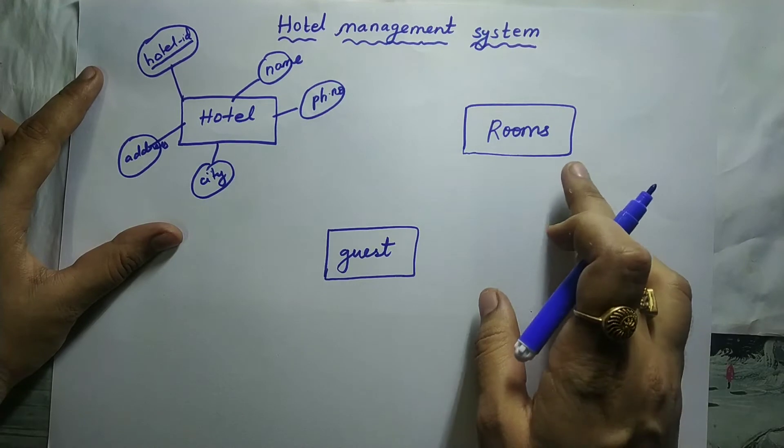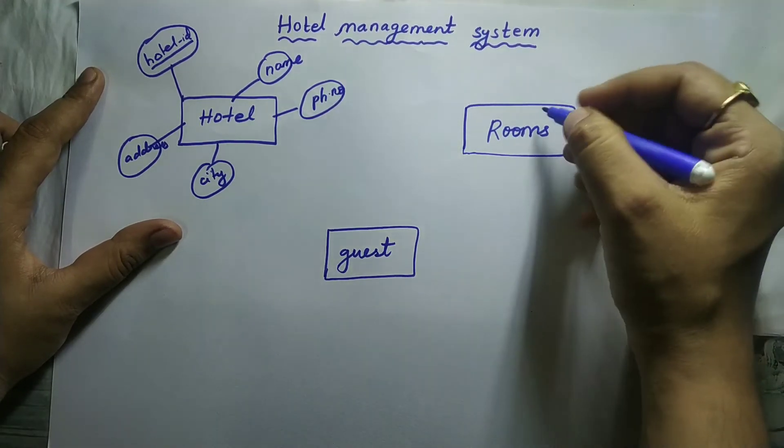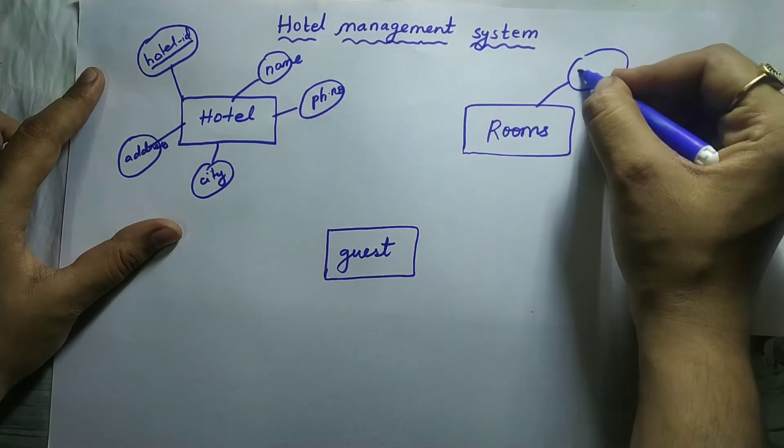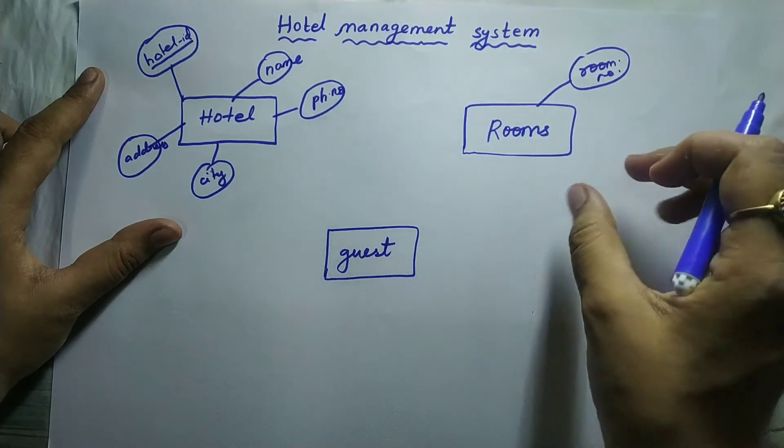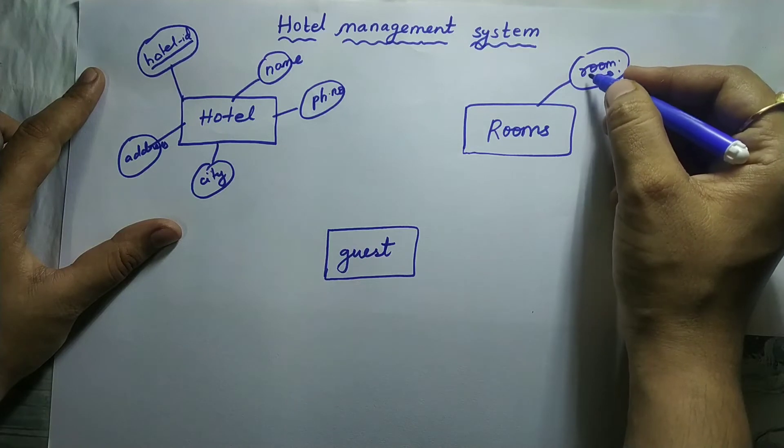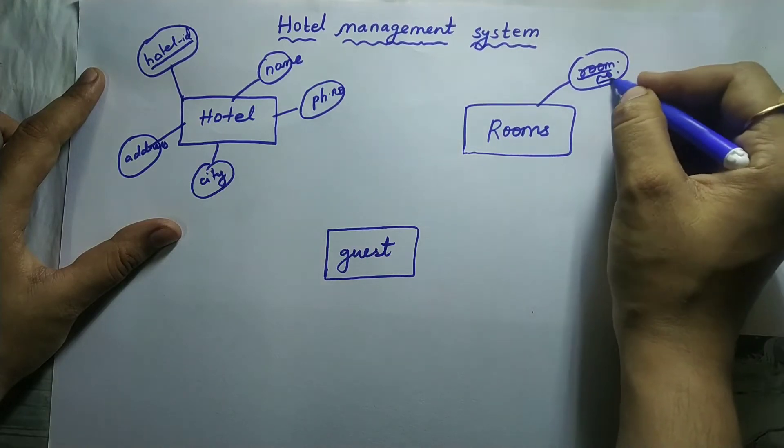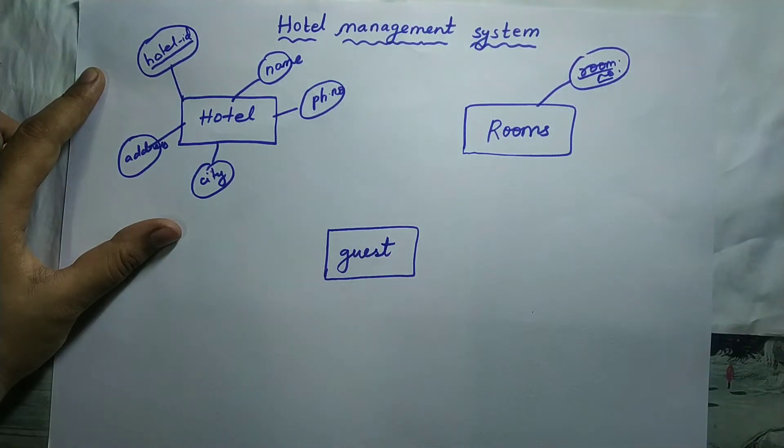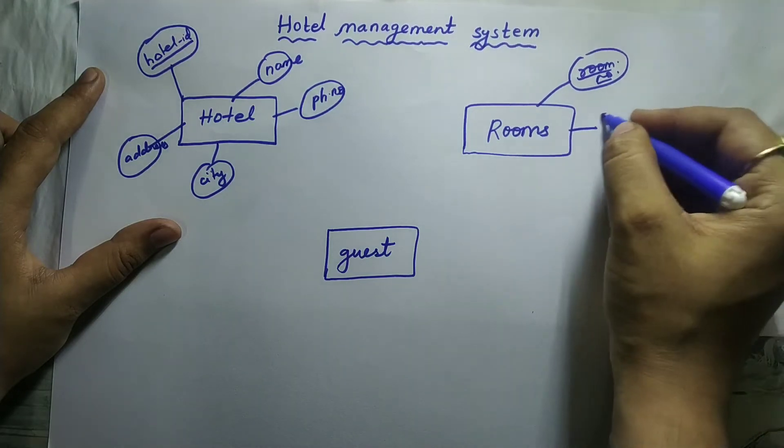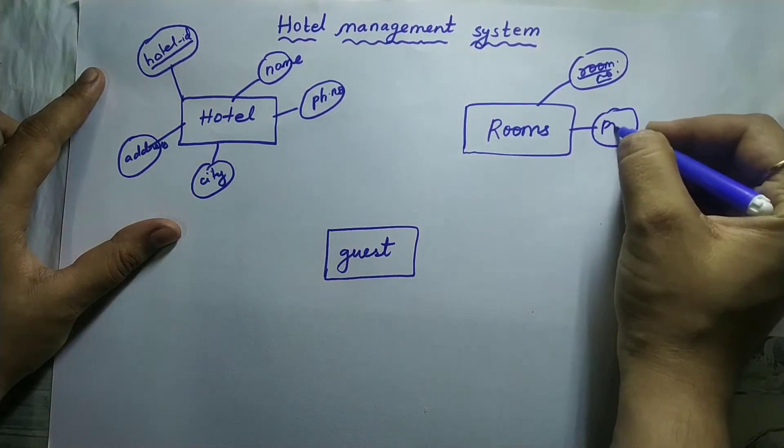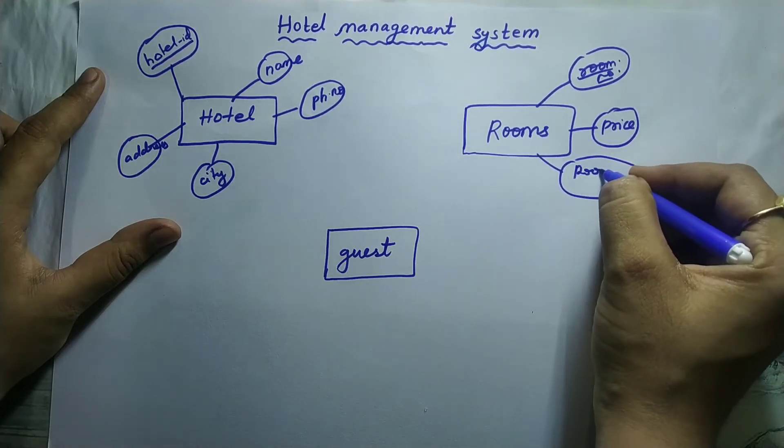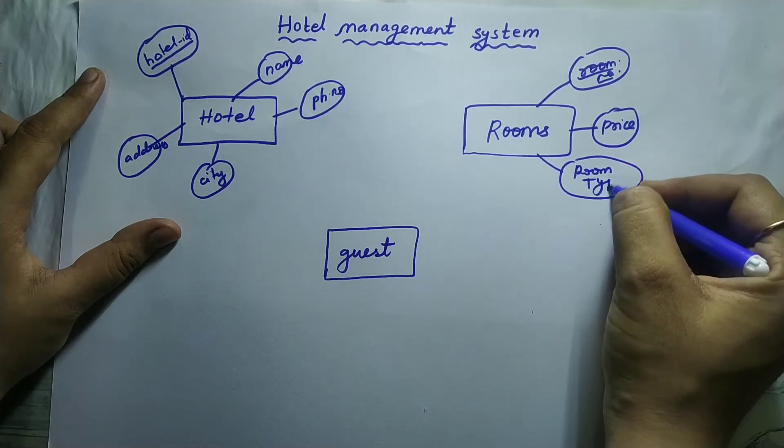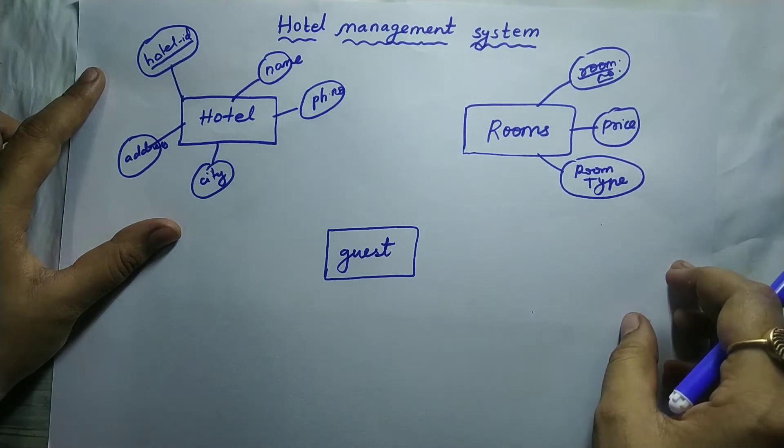Next the attributes of room we should write. Room will also have a number, so room number. And each room will be having a unique number, therefore it is a primary key, so we need to underline the room number. Next the price of that room, next the type of that room, room type, whether it is AC room or non-AC room, whatever.